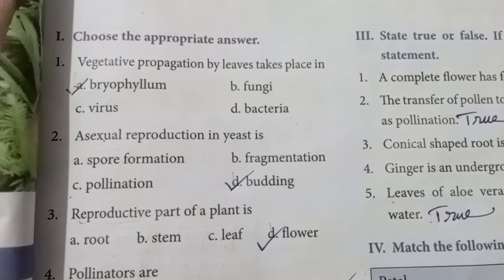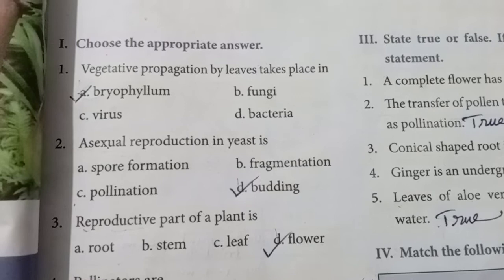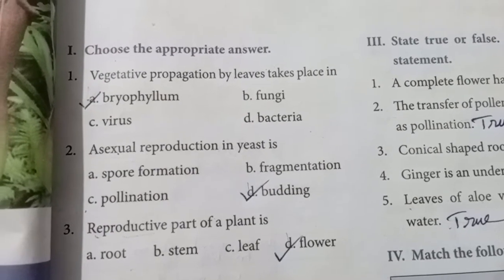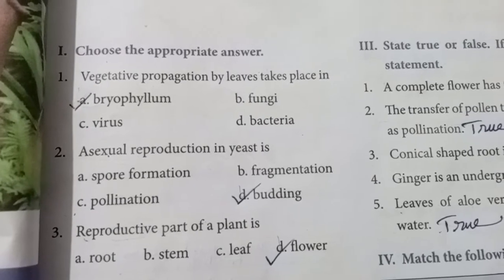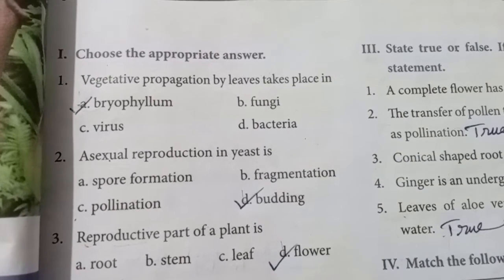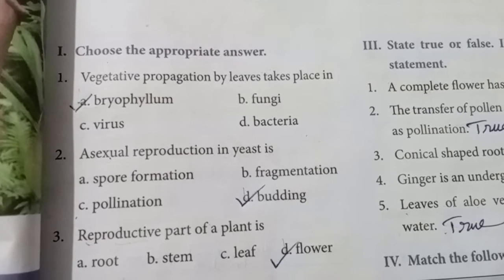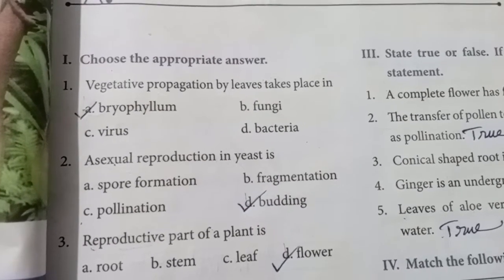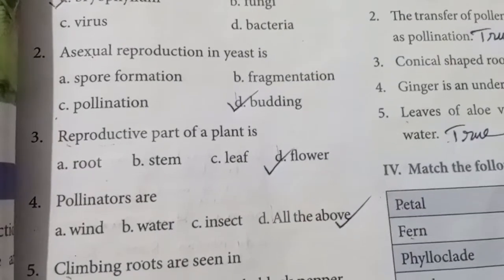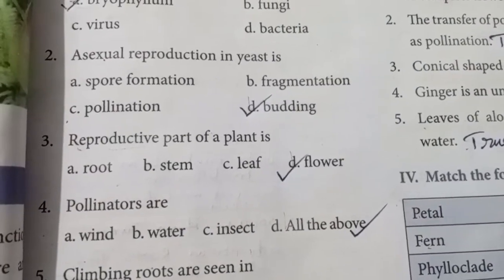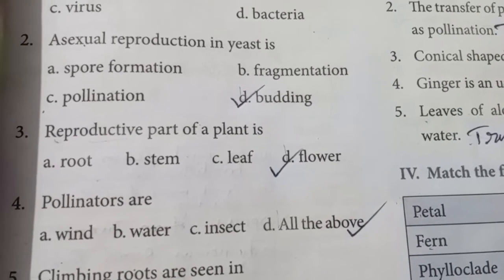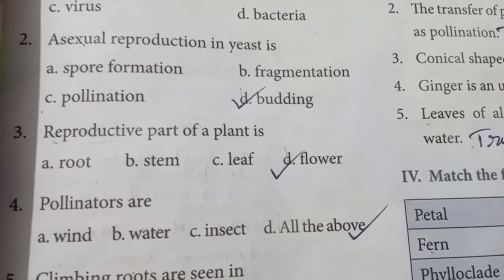Choose the appropriate answer section: Vegetative propagation by leaves takes place in Bryophyllum. In Bryophyllum, the leaves involve in reproduction — new plants evolve as tiny structures from the edge of the leaf. Asexual reproduction in yeast is achieved by budding. The reproductive part of the plant is the flower.